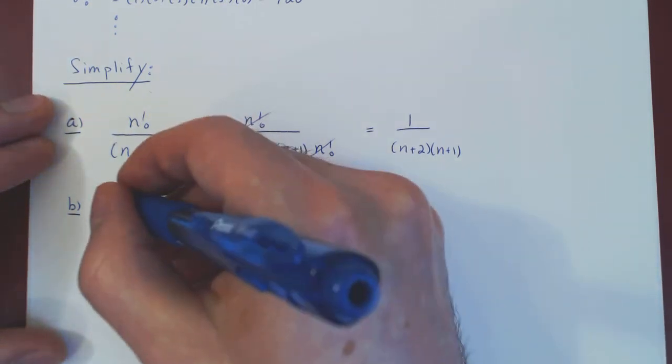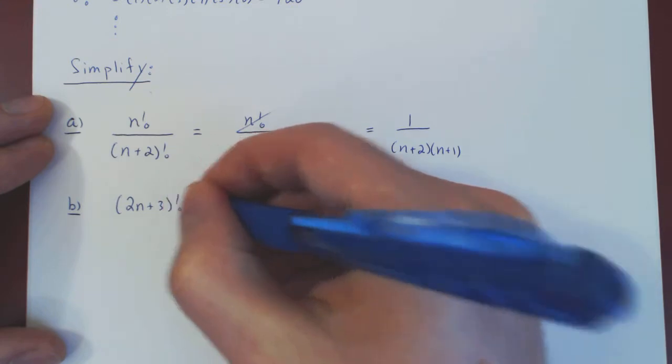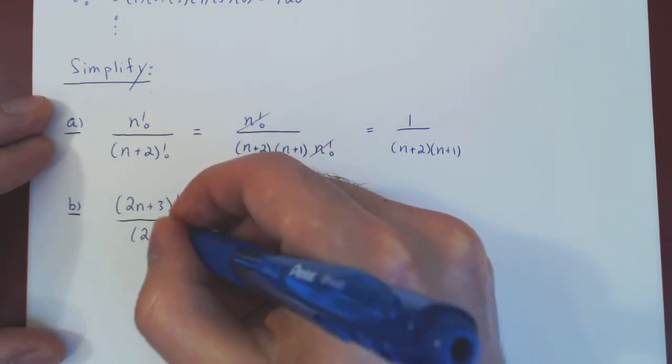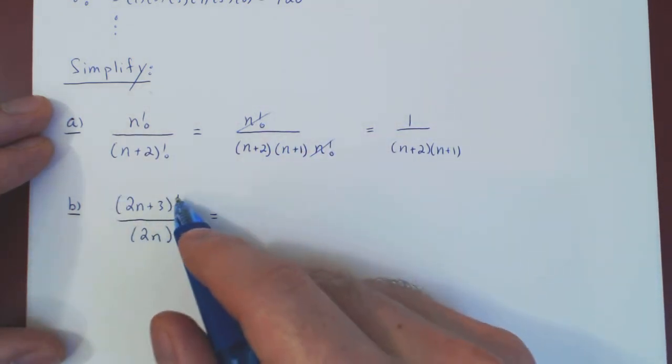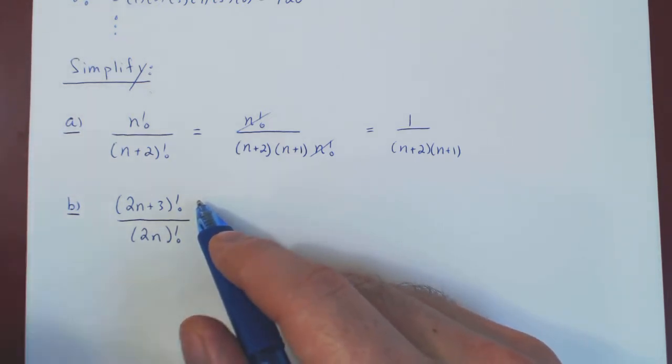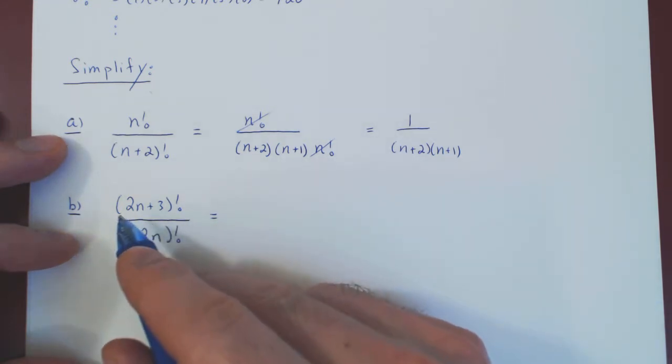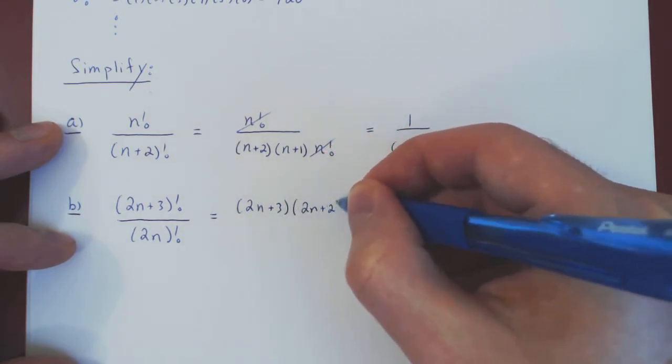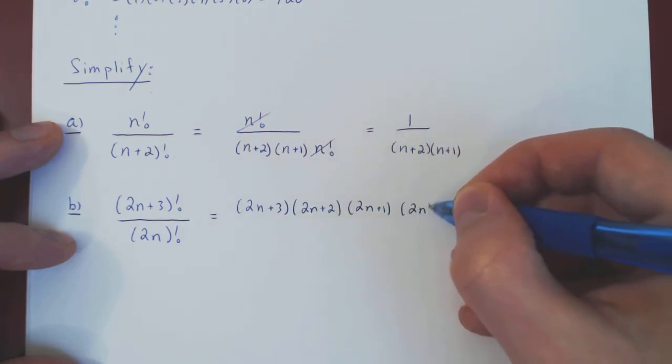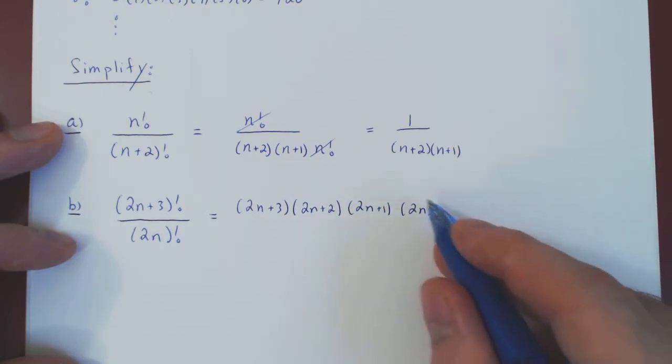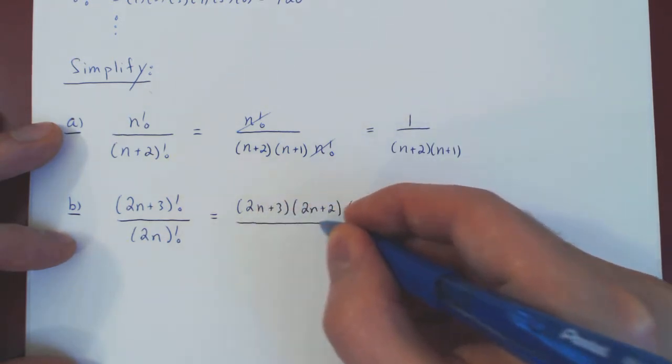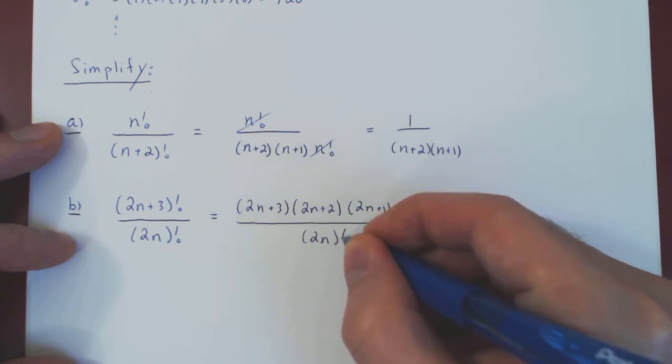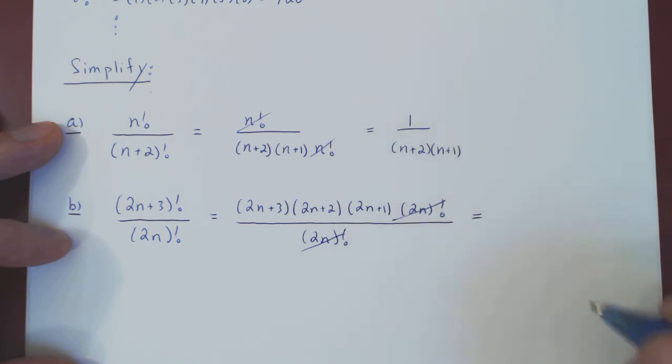Here's our second and last example. What if we have 2n plus 3 factorial over 2n factorial? Now clearly the numerator is the larger factorial. So we'll expand this, again from the largest to the smallest value, until we hit the 2n. So 2n plus 3 factorial is 2n plus 3 times, we're going down, 2n plus 2, times we're going down, 2n plus 1, down again to 2n. And from 2n all the way down to 1, this will be 2n factorial. All over 2n factorial. We can cancel. And that leaves us with 2n plus 3 times 2n plus 2 times 2n plus 1.